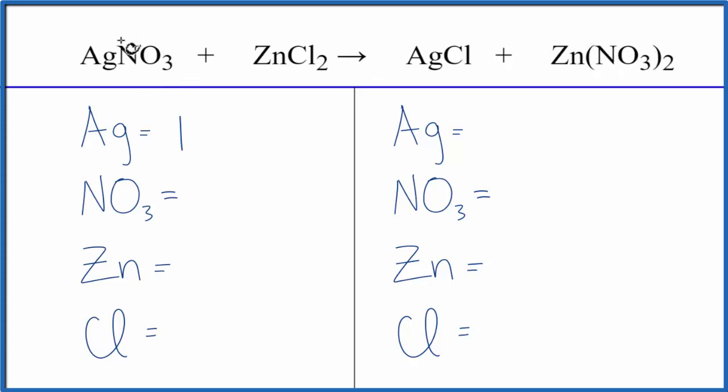So since we have this staying together, I'm going to call it one thing, I'll call it one nitrate ion, one zinc, two chlorines. On the product side I have one chlorine, two of these nitrates, one zinc, and then one chlorine.